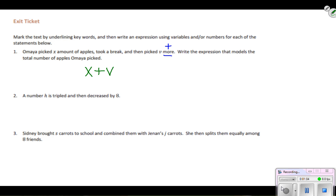Number two: a number h is tripled and then decreased by eight. We need to underline our keywords here. Tripled and decreased. When I see tripled, I think times three, and when I see the word decreased, I think subtraction.